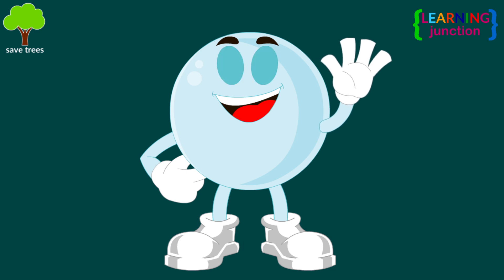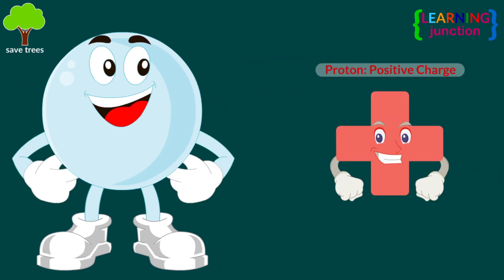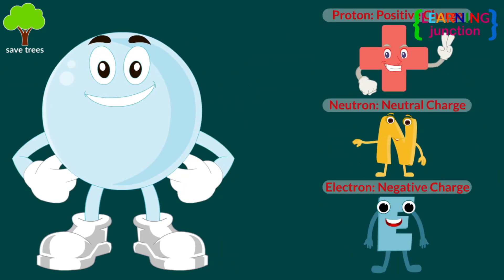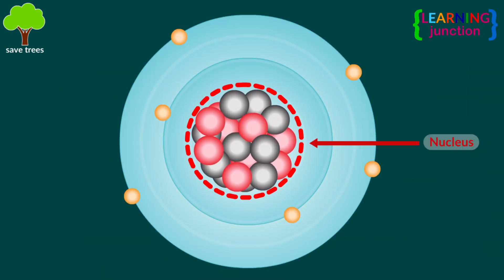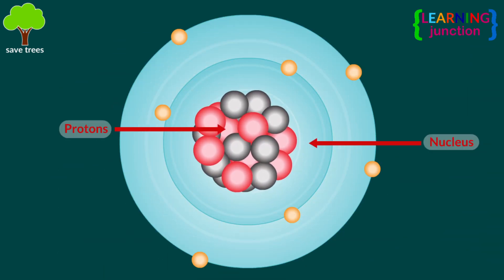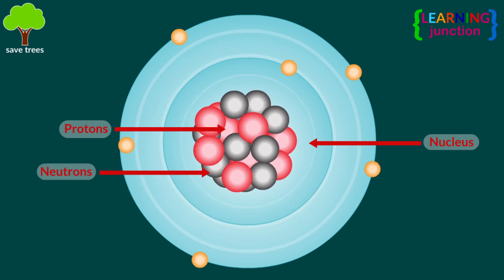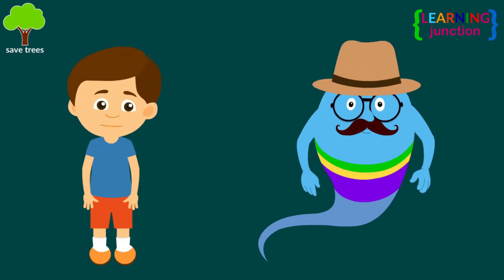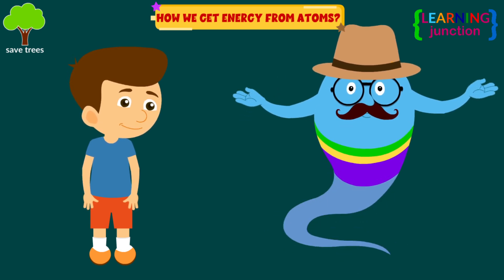Atoms are made up of three particles called protons, neutrons, and electrons. An atom has a core or nucleus containing protons and neutrons, which is surrounded by electrons. Let's see how we get energy from atoms.